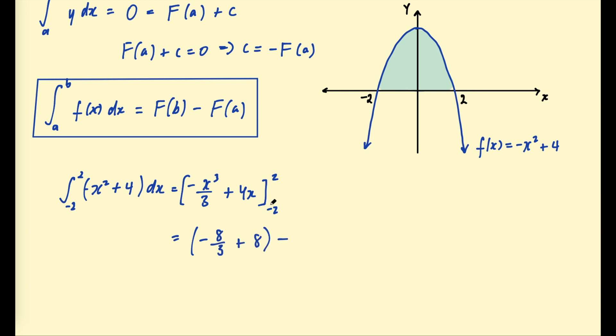And then we subtract the function substituting in negative 2. So negative 2 cubed is negative 8. And then negative negative 8 is going to be positive 8 over 3 take 8. And then we just evaluate this sum. So negative 8 over 3 take 8 over 3. And you should get 32 over 3 or 10 and 2 thirds.